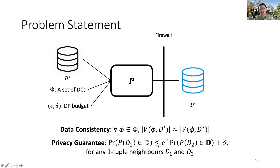Therefore, we are motivated to generate private synthetic data with the structure preserved. More formally, given a private database D*, a set of denial constraints DC, and a DP budget, we would like to design a process P that generates a useful D' approximating D* with two requirements. The first requirement is data consistency: we would like D' and D* to have a similar number of violations for each DC. The second requirement is differential privacy by definition.